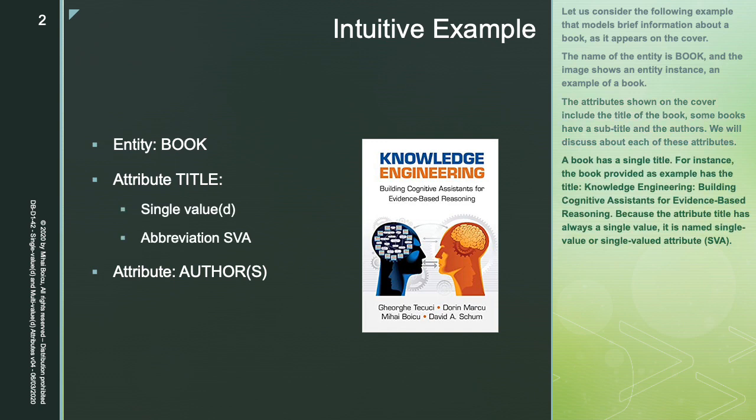A book has a single title. For instance, the book provided as an example has the title 'Knowledge Engineering: Building Cognitive Assistance for Evidence-Based Reasoning.' Because the attribute title always has a single value, it is named a single-value or single-valued attribute, abbreviated SVA.